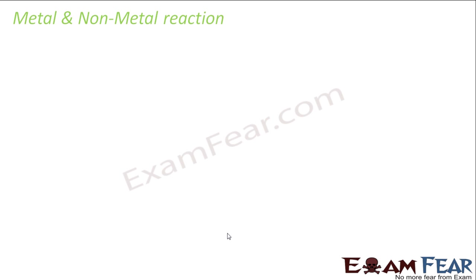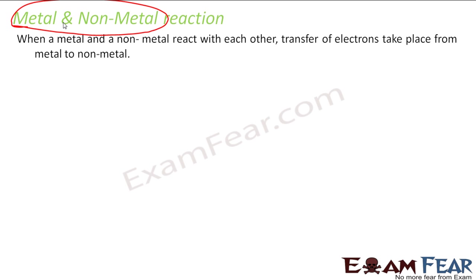So till now we have done the reaction of metal with something, the reaction of non-metal with something, and the reaction of metal with metal — but we have not done the reaction of metal with non-metal. When the metal and non-metal react, the transfer of electrons takes place from metal to non-metal.